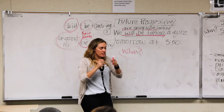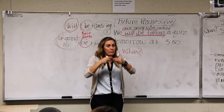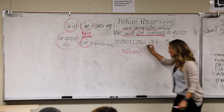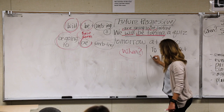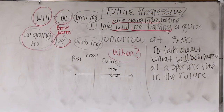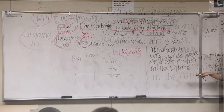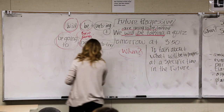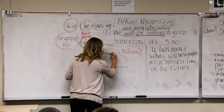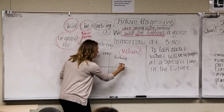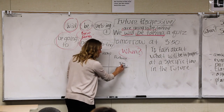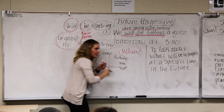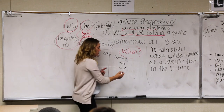'We will be taking a quiz tomorrow' — but I didn't just say tomorrow, I gave a specific time. When you have a specific time in the future and you want to focus, you zoom in and look at what will be happening in progress at that time. That's when we use the future progressive — to talk about what will be in progress at a specific time in the future. It will probably continue beyond that time too.